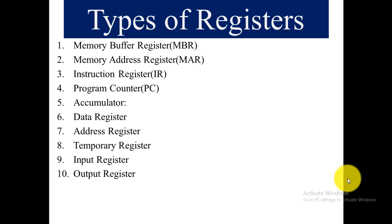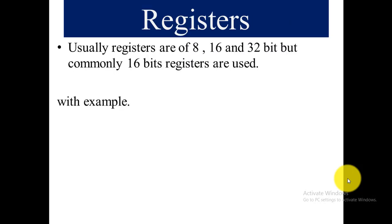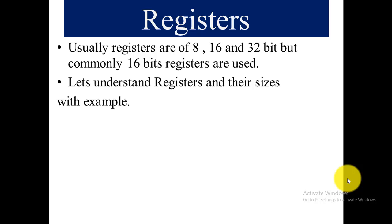Let's examine all these registers one by one and see what role they play in the processing of instructions for the processor. Usually registers are of 8-bit, 16-bit, and 32-bit. But commonly, 64-bit registers are used in the latest processors.